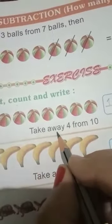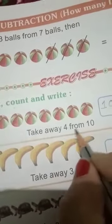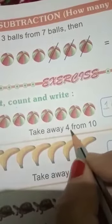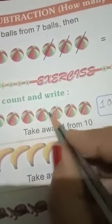Take away 4 from 10. What do you want to do in the box? So 1, 2, 3, 4. Okay, you take away 4 balls, so write down 4 in this box.